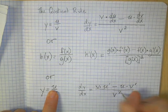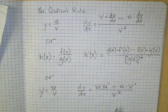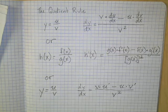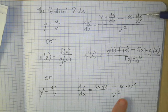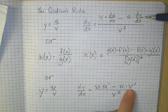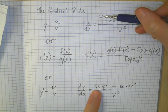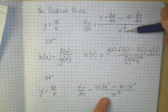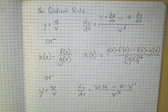Notice this is kind of the easiest way to write it — I kind of wish they had written it this way in the formula packet, but they didn't. This is just the derivative of u, this is just the derivative of v, then the u function and the v function — the numerator function, the denominator function — all divided by the denominator function squared. That is what we have, and now we're going to do an example.